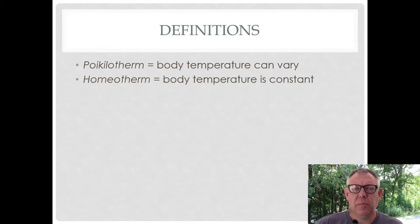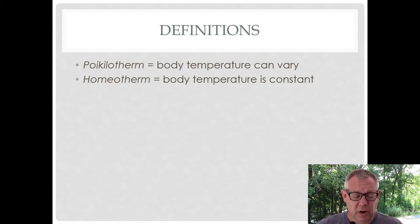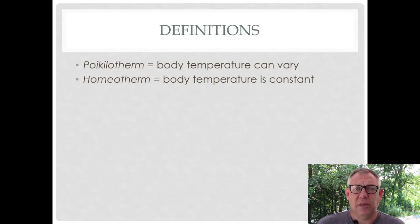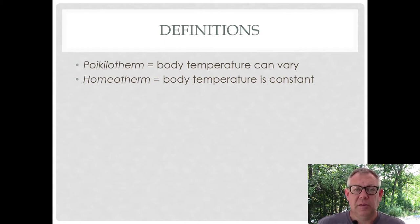We've got some very important definitions that I want to go over to start with, and this may be the most important part of the talk because these definitions are used all the time, but we've got to be very clear on what they mean. So we've got poikilotherm and homeotherm. Poikilotherm is an organism whose body temperature can vary. Homeo means same, so a homeotherm is an organism whose body temperature remains constant.